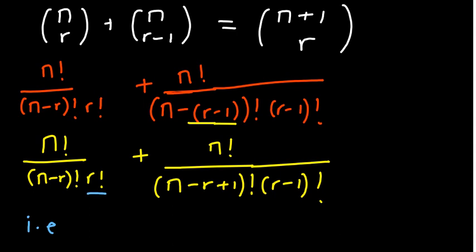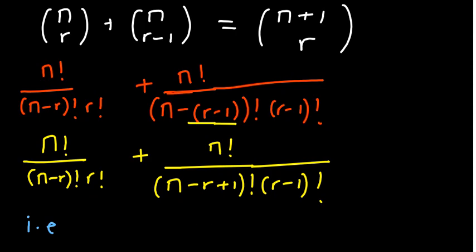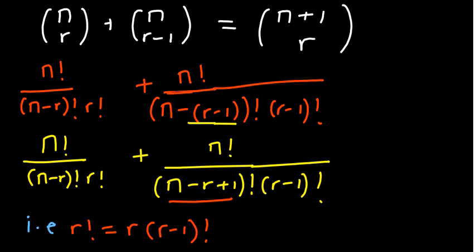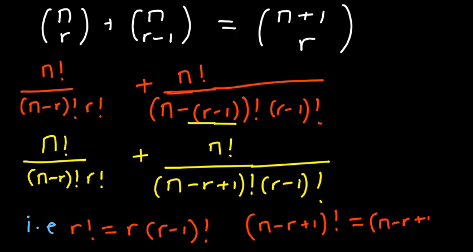We can somehow expand the bigger ones so that they showcase the other one. Let's start with r — r is bigger than r minus 1. So r factorial can be expanded by reducing it by 1: r factorial equals r times r minus 1 factorial. Similarly, n minus r plus 1 factorial equals n minus r plus 1 times n minus r factorial.